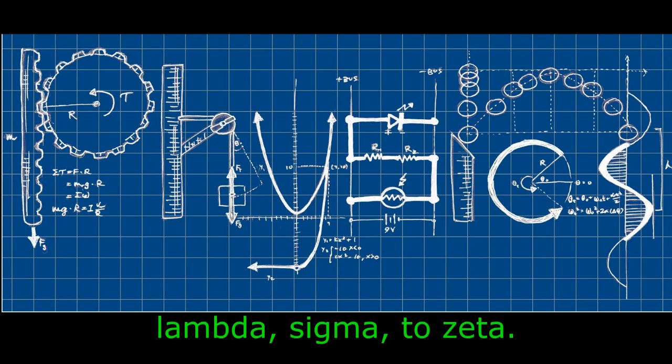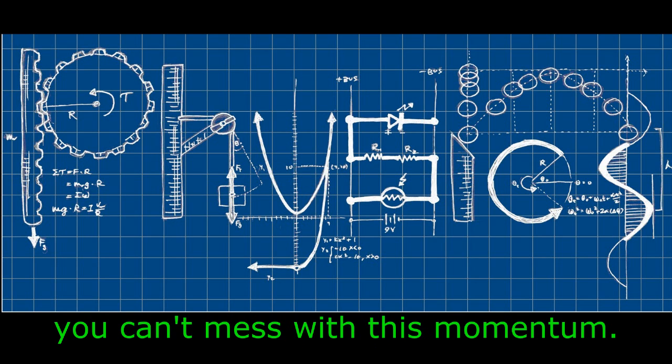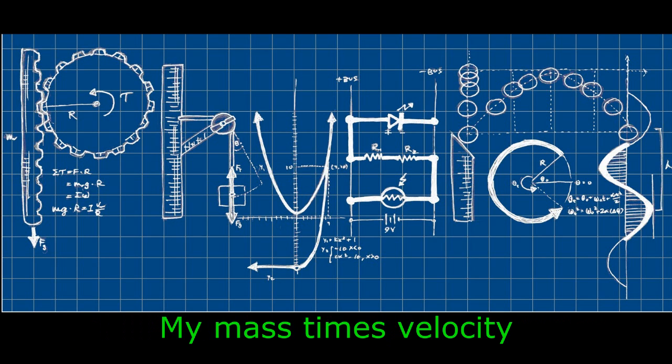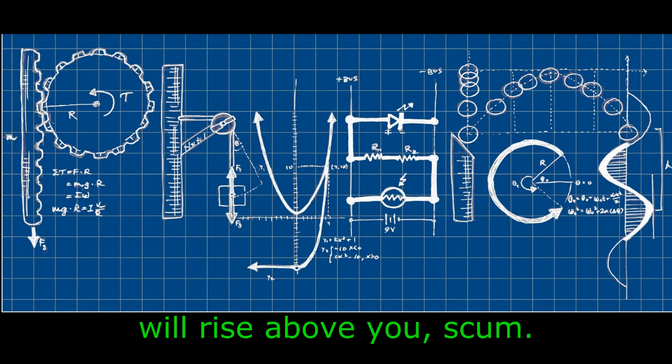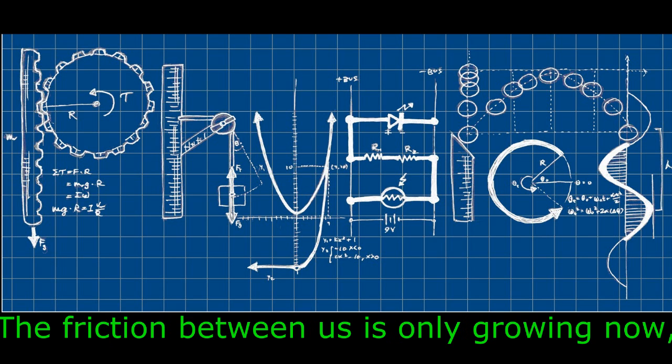lambda, sigma, to zeta. Don't try to stop me, you can't mess with this momentum. My mass has velocity, it lies above, you've stopped. The pressure's so high now, go and decrease your volume.